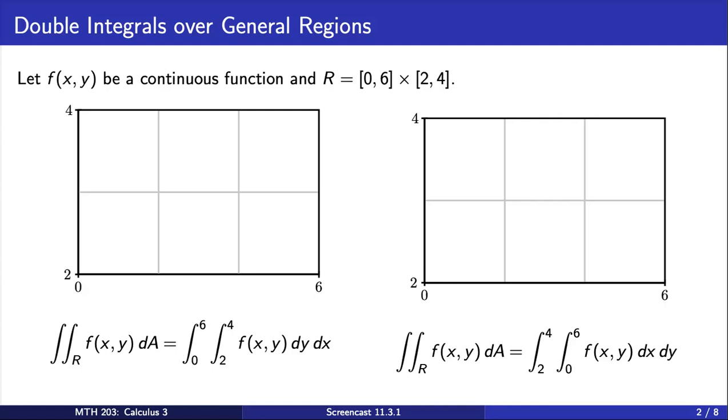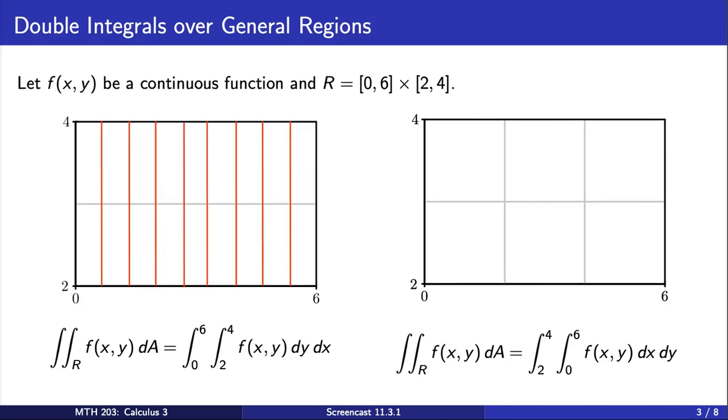Note that on the left side, when we integrate first with respect to y, we are slicing the rectangle in the y direction. Each one of the red slices goes from y equals 2 to y equals 4, so the size of the slice in the y direction is constant. We take these slices for each x value from 0 all the way to 6. These slices are what gives us these constant values in the iterated integral.